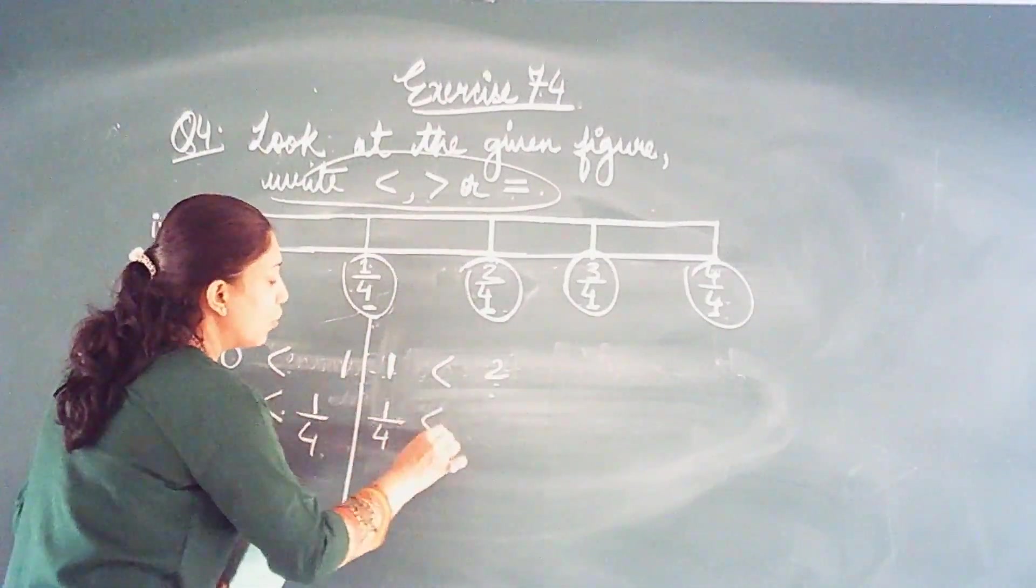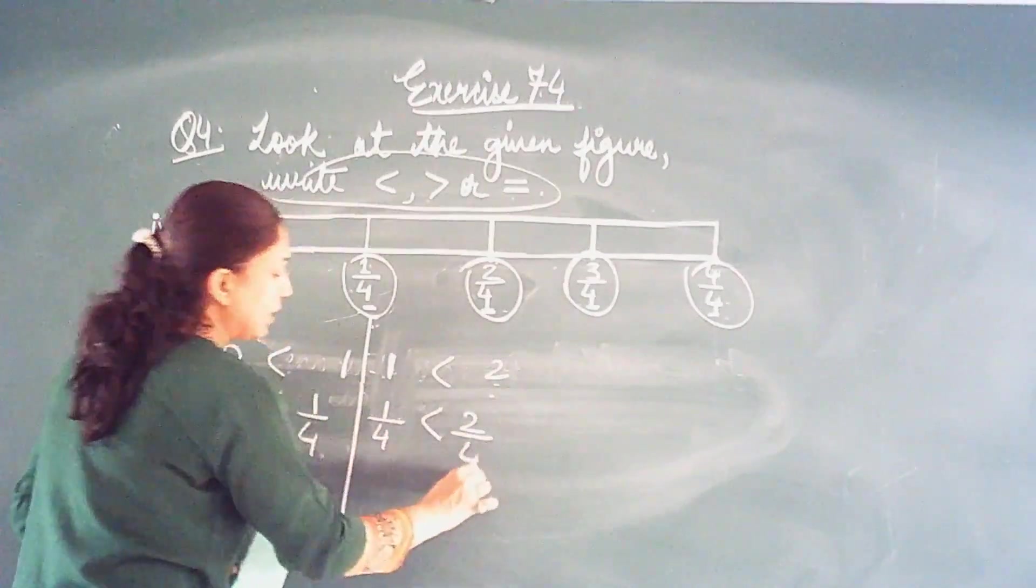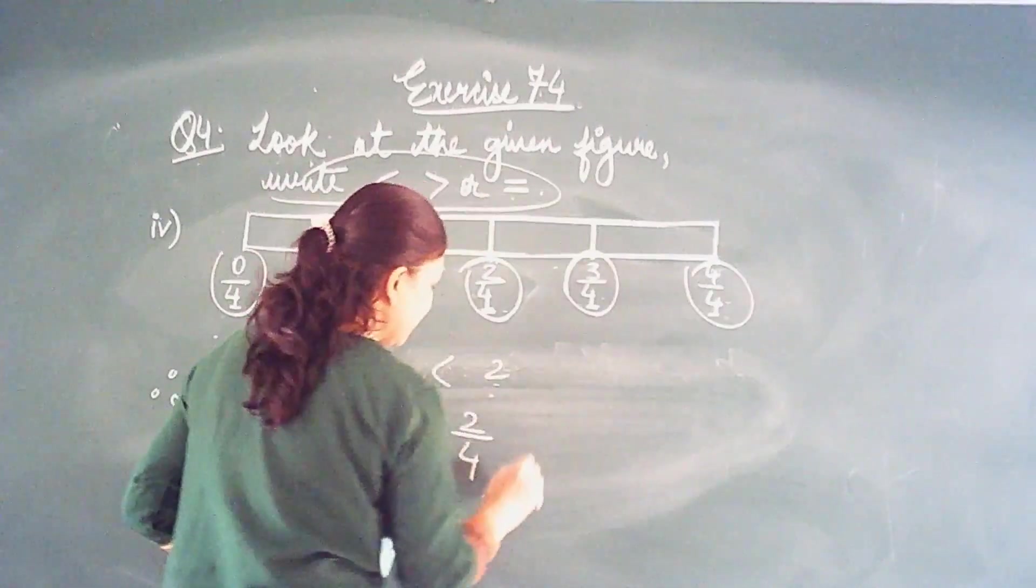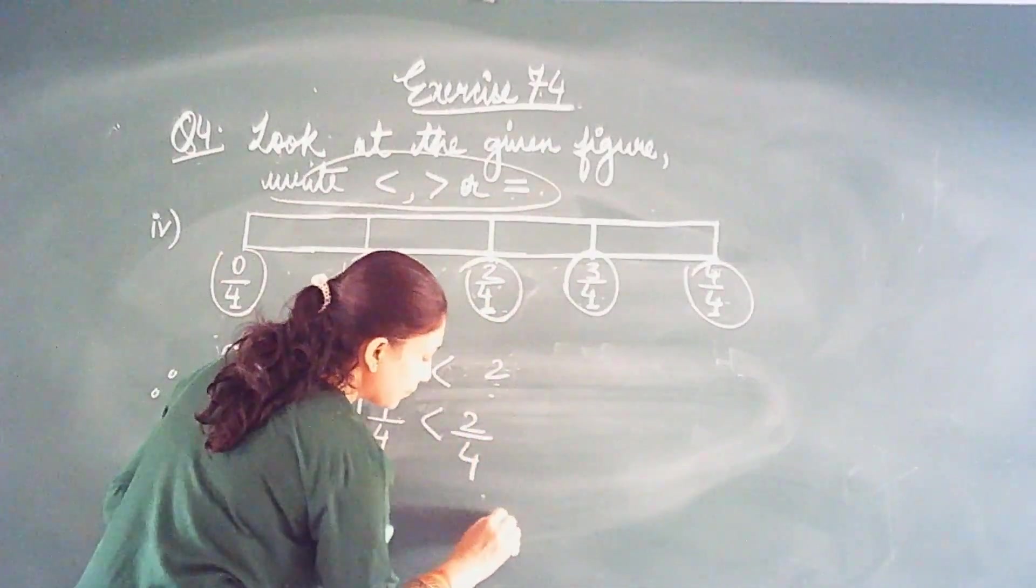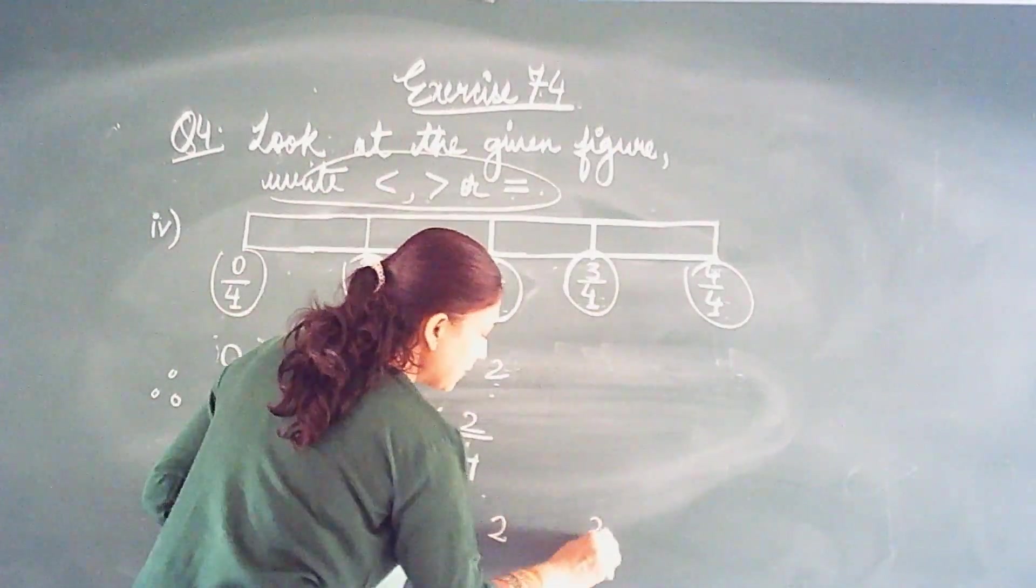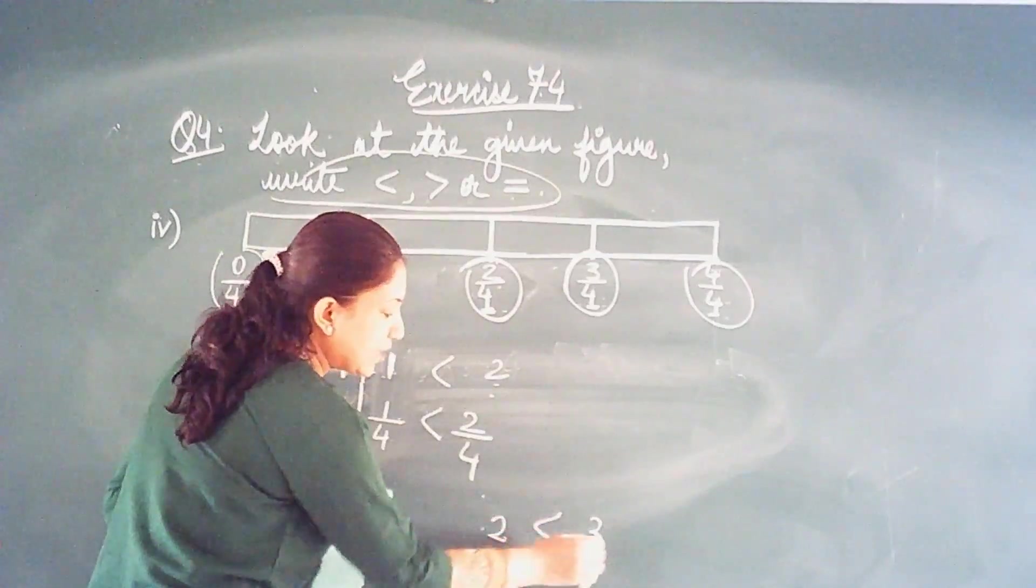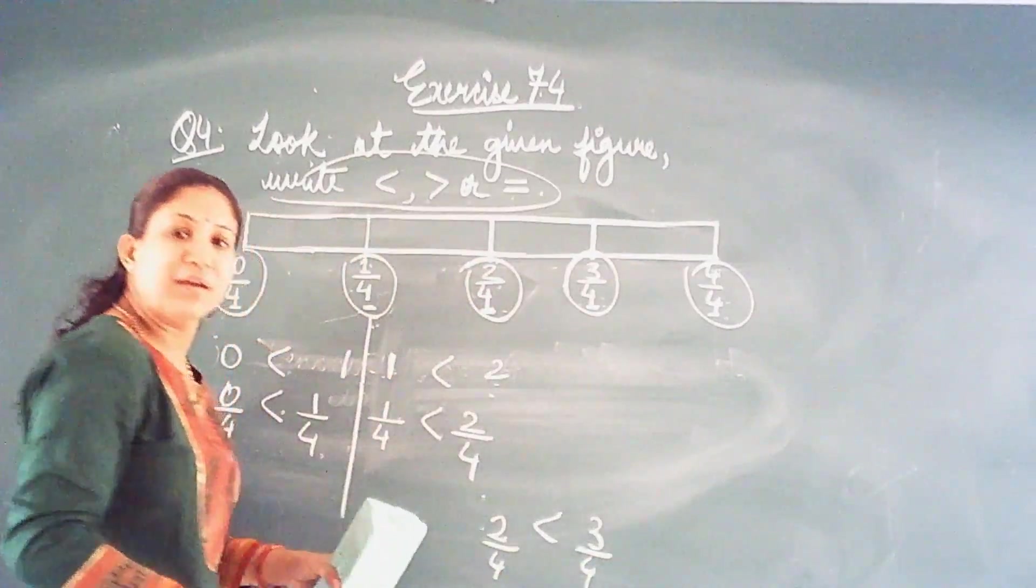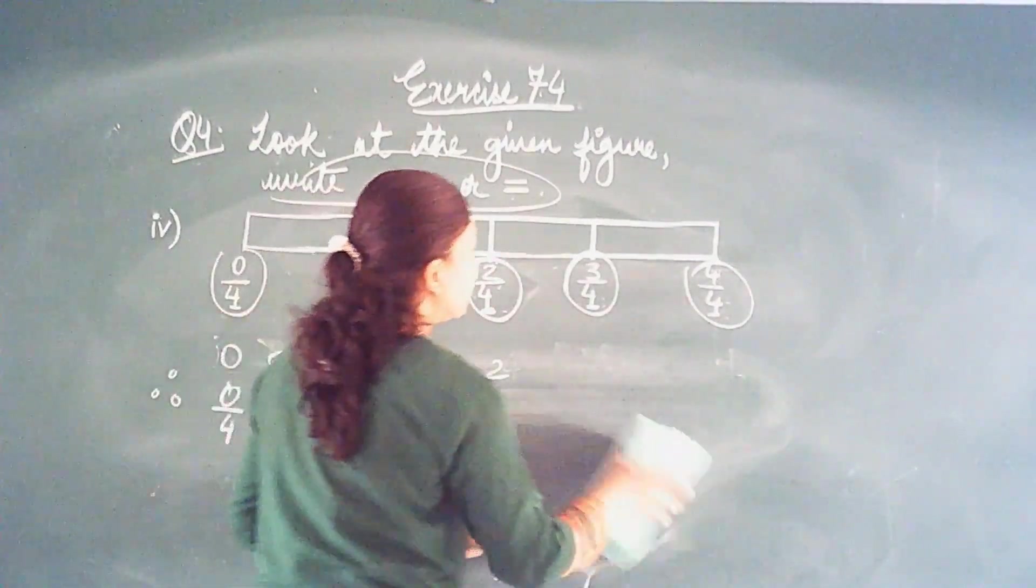the whole fraction will become less than 2 by 4. Now the same thing will compare the numerator. Now the same thing will compare with 2 and 3. Again 2 is less than 3. So 2 by 4 is less than 3 by 4. Got it? Like this.